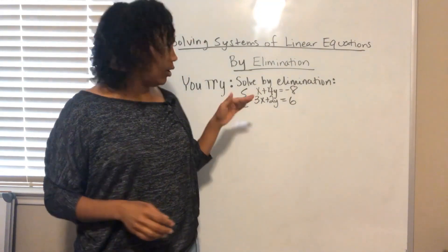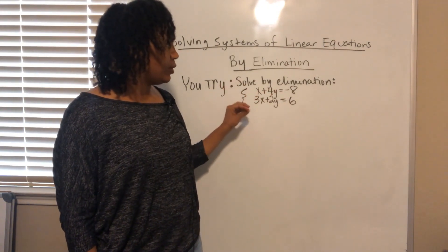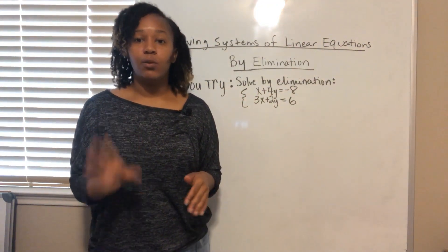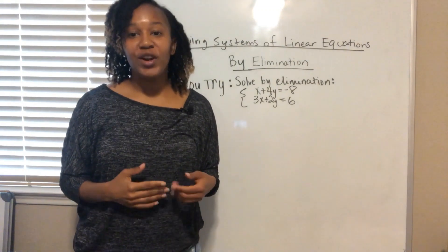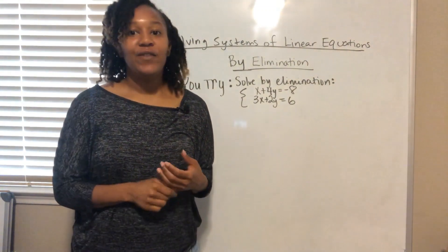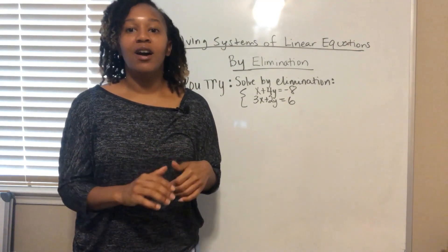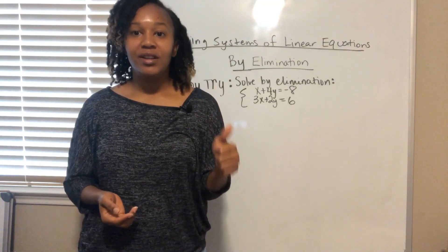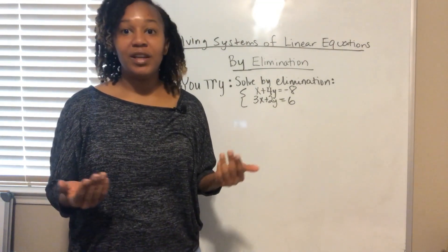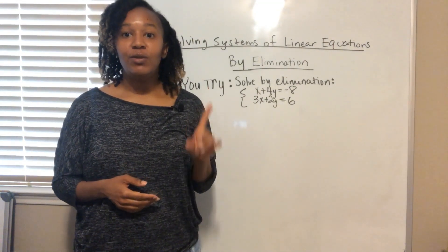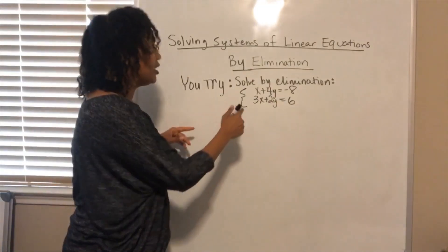Now I want you to try this problem on your own. Solve by elimination: x plus 4y equals negative 8, and 3x plus 2y equals 6. Pause the video and work on it. The answer should be (4, negative 3). If you got (4, negative 3), great — you're ready to move on. If not, stay and watch as I work through it.